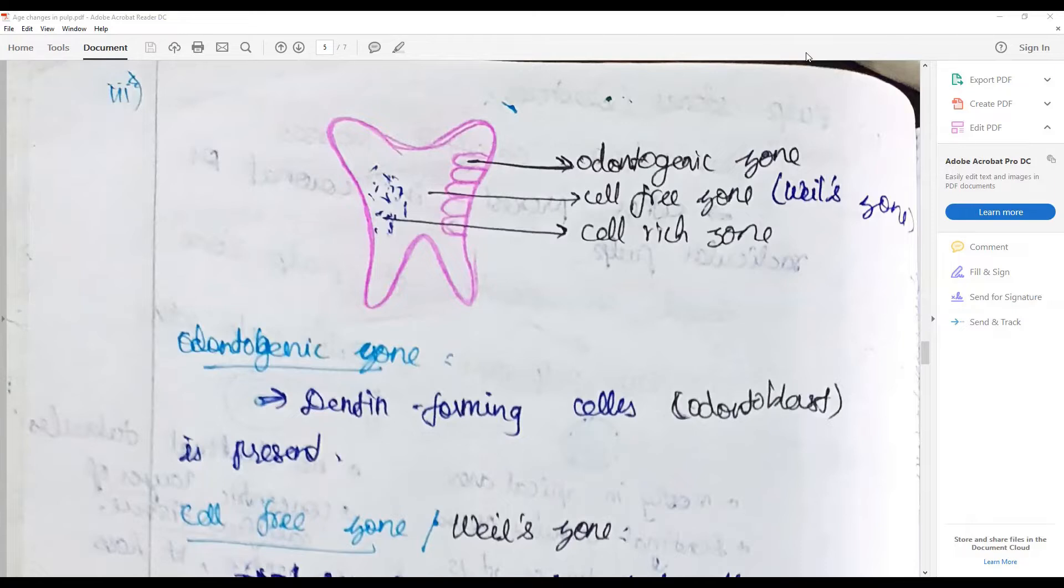The odontogenic zone is bordering near to the pulp, followed by cell-free zone and cell-rich zone which forms the core of the pulp. The odontogenic zone is the one that has the vital odontoblastic cells that secrete the dentin and border with the dentin.